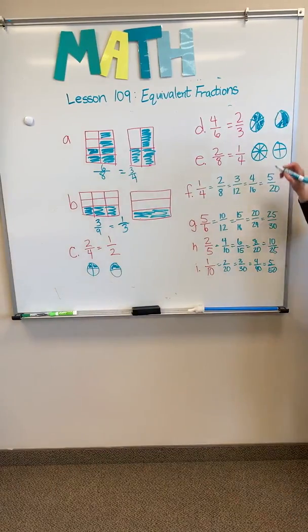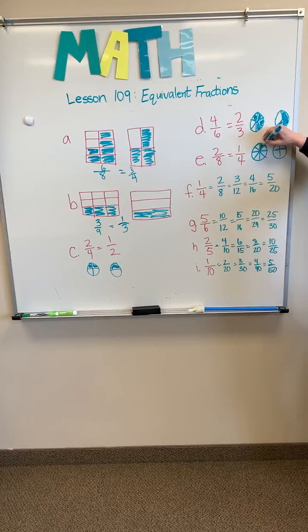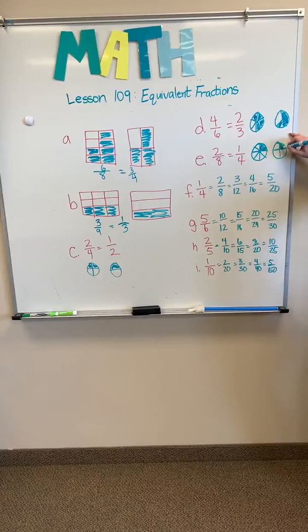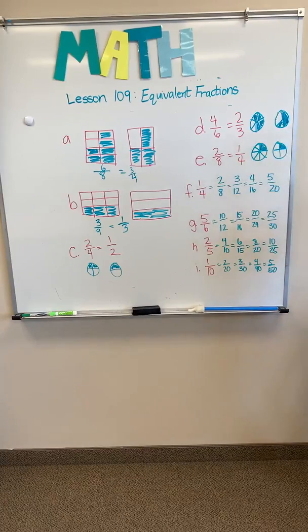Our next one is 2 eighths. You can see right now that 2 eighths is equivalent to 1 fourth.